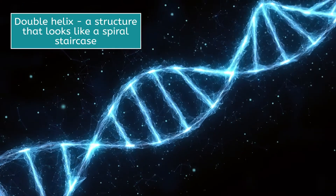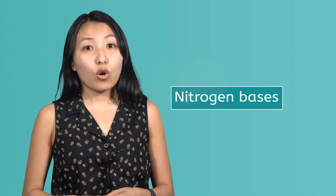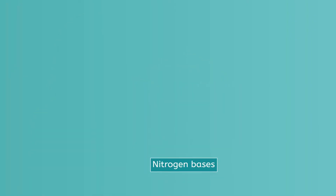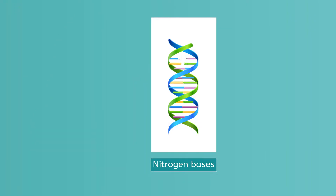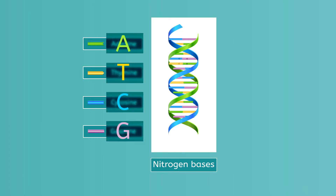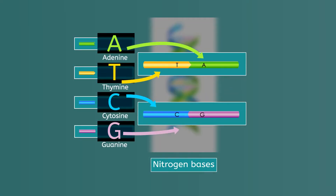What they proposed is that DNA is a double-stranded molecule that is shaped like a double helix, which is a structure that looks like a spiral staircase. The genetic instructions are stored in nitrogen bases, which form the steps of the staircase. There are four nitrogen bases in DNA: adenine, thymine, cytosine, and guanine, abbreviated as A, T, C, and G. These bases are always bonded in pairs within DNA, with A always bonding with T, and C always bonding with G.